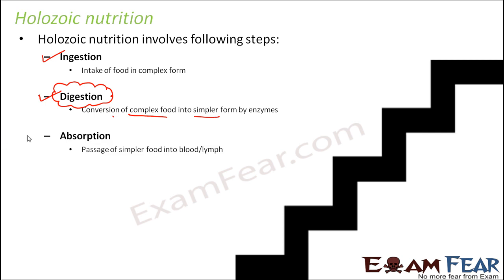The next step is absorption, where the simple food is now absorbed by the body. It is transported through the blood or the lymph — lymph is also a fluid like blood which flows throughout the body. If you want to transport something to a particular part of the body, you dissolve that substance in the blood, and blood will carry it to each and every part of the body.